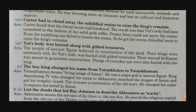Carter found that the ritual resins had hardened, and as a result Tut's body had been cemented to the bottom of his gold coffin. Proper force could not move the resins. Even the scorching sun failed to loosen the resin. When the mummy was dried in the sun, the resins still did not move at all. That is why Carter had to cut the mummy and chisel away the king's remains.